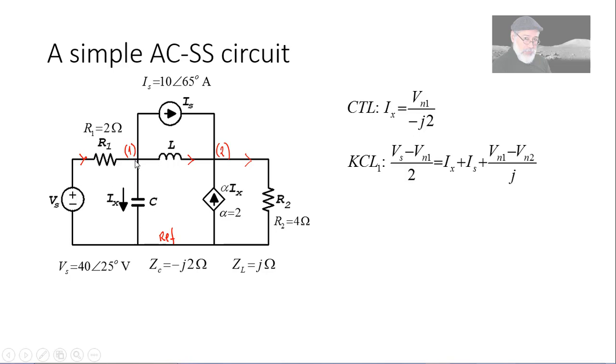KCL1, that is KCL for this node here, currents going in only 1, Vs minus V1 divided by 2. That's equal to the currents leaving the node, that is Ix, Is, and this one in this branch, V1 minus V2 over the impedance of the inductor, that is J.